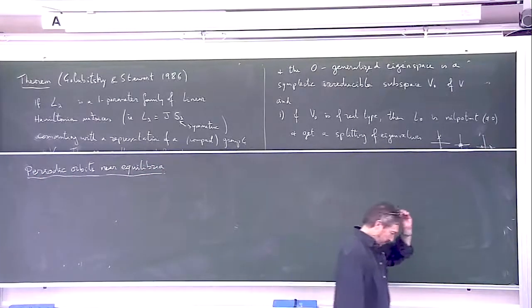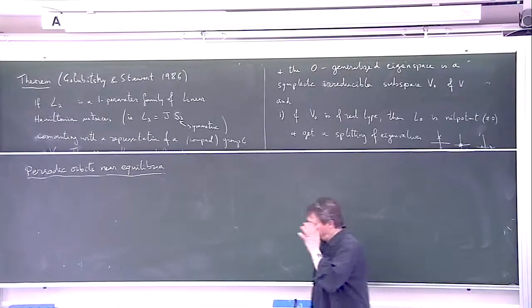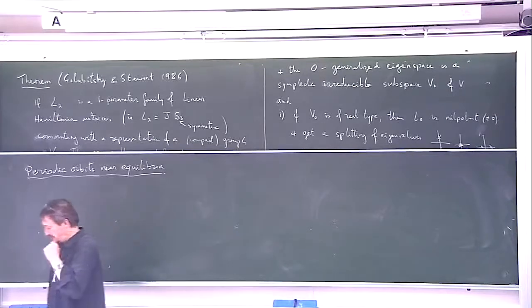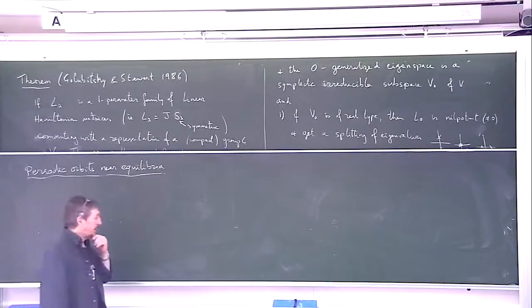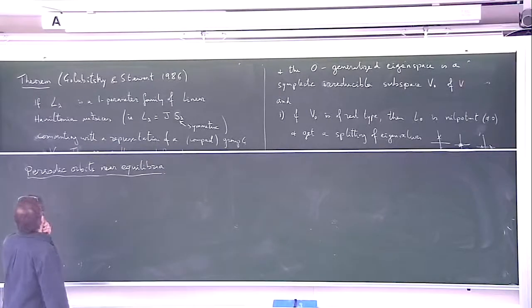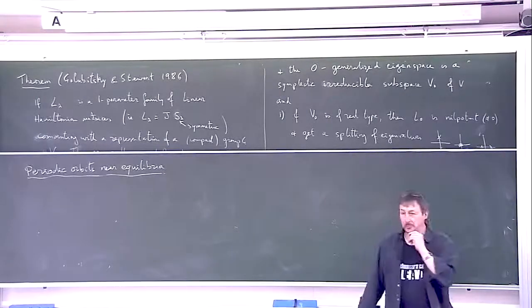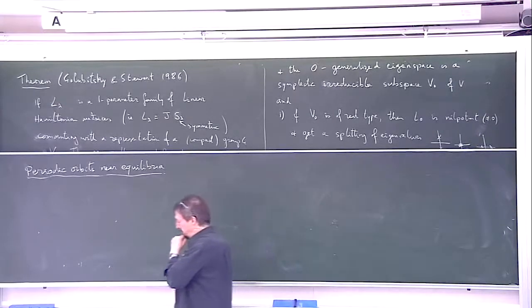So this is a similar philosophy to bifurcations, but it's not a bifurcation problem, although there are bifurcation questions associated to it. I just want to talk about what we know about existence of periodic orbits near equilibrium points.